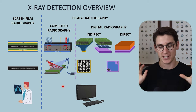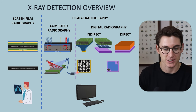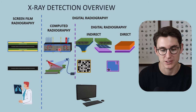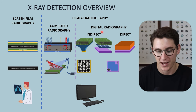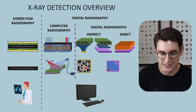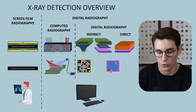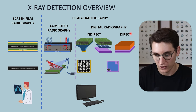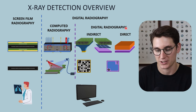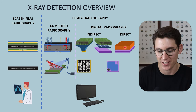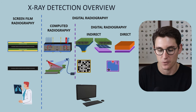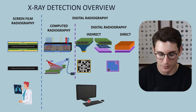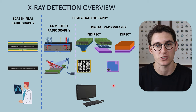Taking a step back, there are multiple different systems: screen film radiography, computed radiography, indirect digital radiography — which can use either a CCD chip or a TFT array — and direct digital radiography, which takes x-ray energy and directly converts it into an electronic signal on a TFT array that is then processed on our computer screen.